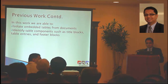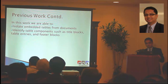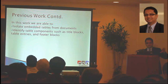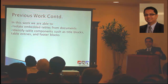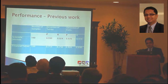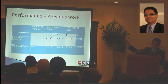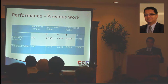To recap from our previous work: we could isolate tables from a document and identify table components such as title blocks, table entries, footer blocks, and other cells — including what the content of cells contains. Performance for the 1996 study: here we have detection of tables and detection of cells, and P and R are precision and recall. These are standard evaluation mechanisms in information retrieval and NLP.